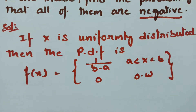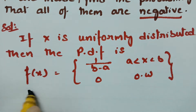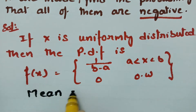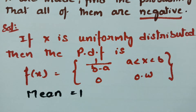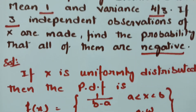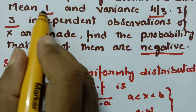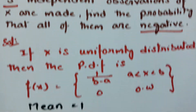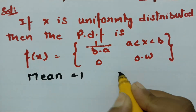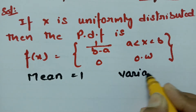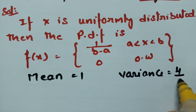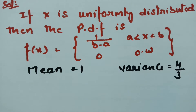From the question, the mean value is given as 1 and the variance is given as 4 by 3.